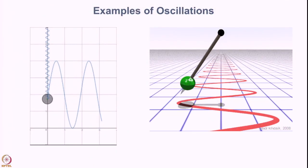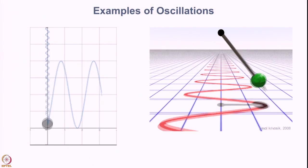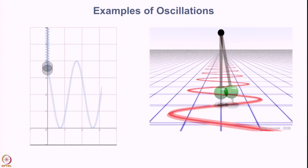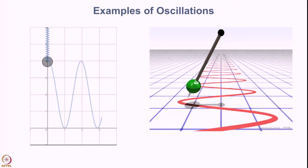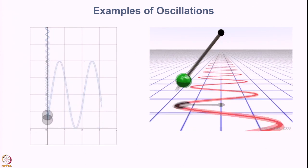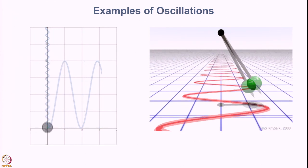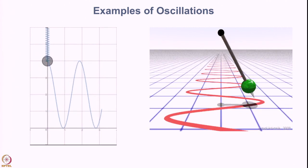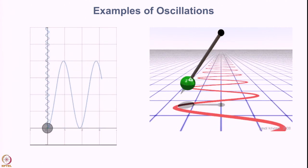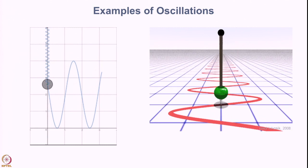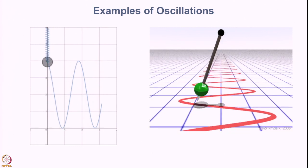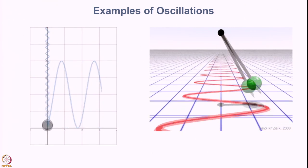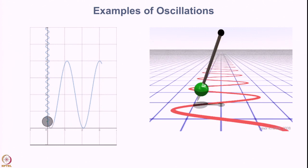Here is an example of oscillations in mechanical systems. The first one is a simple spring balance and on the right side you see a simple pendulum. In both these systems, there is no friction and the system is oscillating about its mean value.